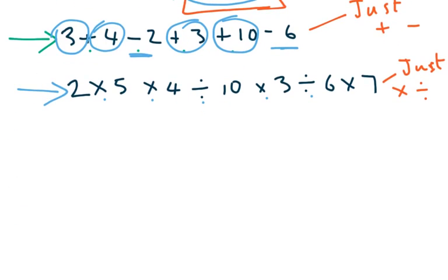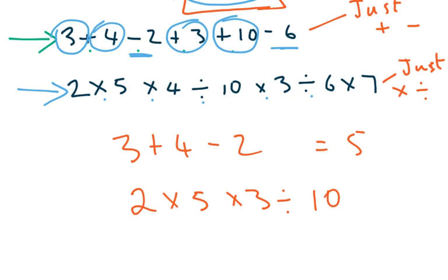The sort of question you might get would be, for example, you might get a question like 3 plus 4 minus 2, which is just 7 minus 2 is equal to 5. It's as simple as that. You won't get anything more complex than that. And then you might get 2 multiplied by 5, multiplied by 3, divided by 10. So again, that would be 2 multiplied by 5 is 10, multiplied by 3 is 30, divided by 10 is 3. That's the type of level you might get.